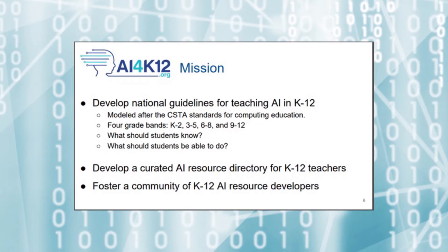We divide these grades into four grade bands: K-2, 3-5, 6-8, and 9-12. For each grade band, the guidelines specify what students should know about AI and what they should be able to do. The organizing framework for the guidelines is a list of five big ideas in AI, which you can see in this graphic.